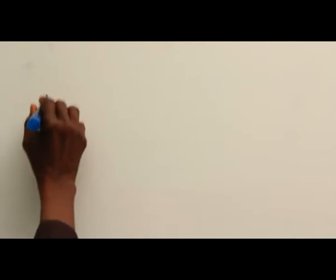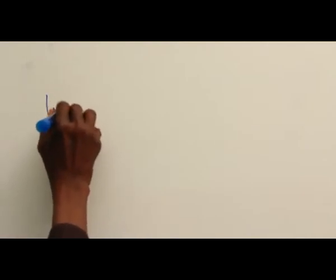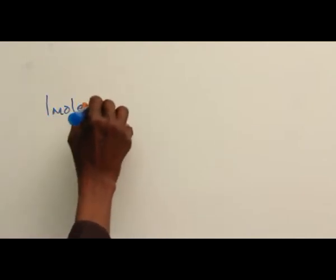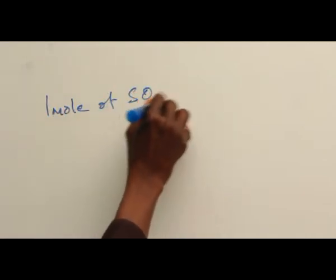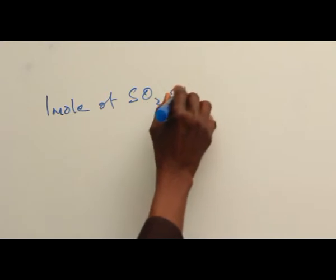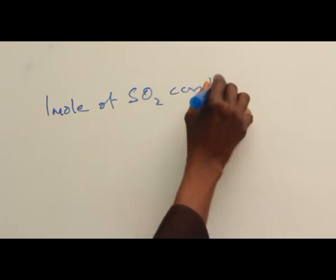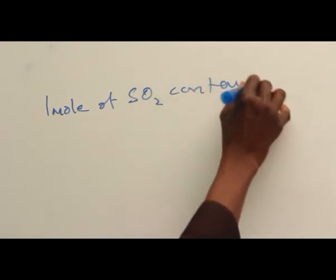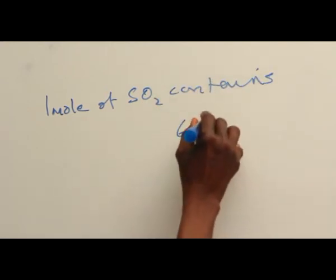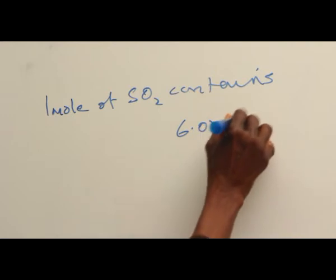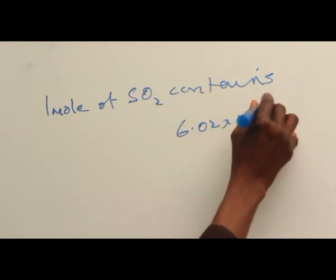Now, one mole of every substance contains the Avogadro number. One mole of SO₂ contains 6.02 times 10 to the power 23.